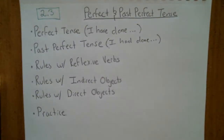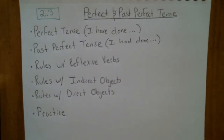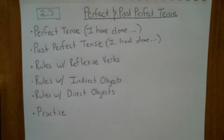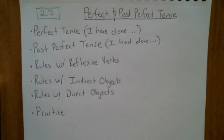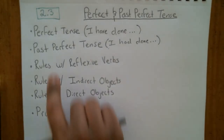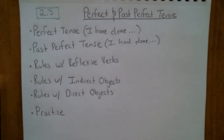Welcome to Aprendamos Español, our third lesson in our intermediate course. In this course, we're going to cover how to express the thought 'I have done something' — like 'I have eaten' or 'I have spoken.' That is known as the perfect tense. Then we'll talk about 'I had done something,' known as the past perfect tense. After that, we'll go over how to use both tenses with reflexive verbs and direct and indirect objects. Then we'll practice.